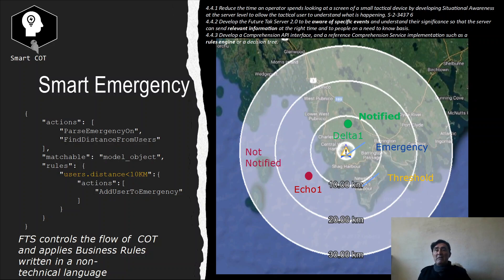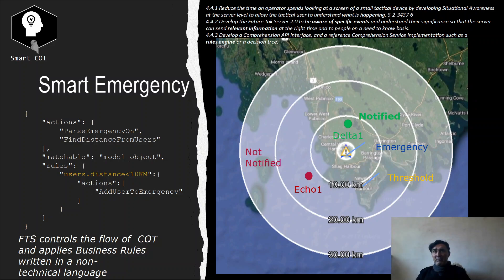FTS2 does not simply pass information — it analyzes the information and understands that an emergency has occurred. The emergency is passed through the emergency component and we can execute rules. Rules can be of any type; what we are going to present here is a simple example. In this example, the emergency is located here, and we have set a rule that if a user is within 10 km of distance, they will receive the emergency notification.